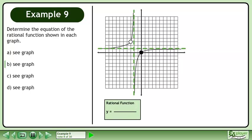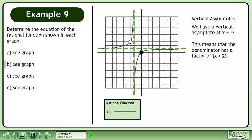Let's draw a green box to store the rational function we will be making. We have a vertical asymptote at x equals negative 2. This means that the denominator has a factor of x plus 2.